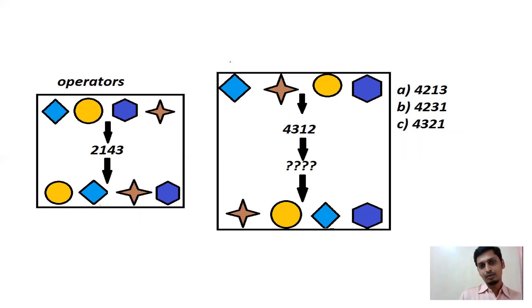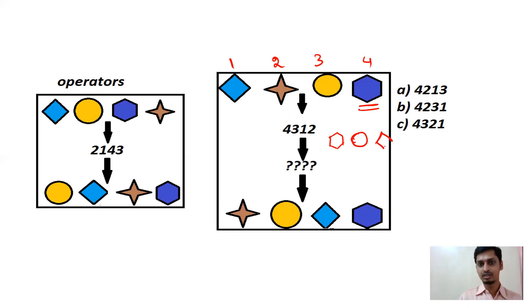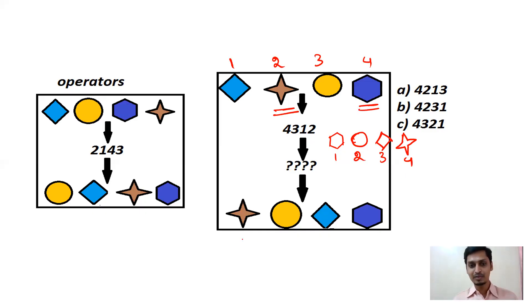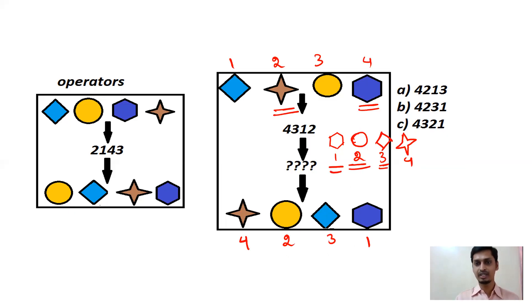Write 1, 2, 3, 4. The arrangement is 4, 3, 1, 2: so 4 is a hexagon, 3 is a circle, 1 is a rhombus, and 2 is a star. Now write 1, 2, 3, 4 over those output symbols. Star is 4, circle is 2, rhombus is 3, hexagon is 1. So the answer is 4, 2, 3, 1 — click and drag it to the question mark.